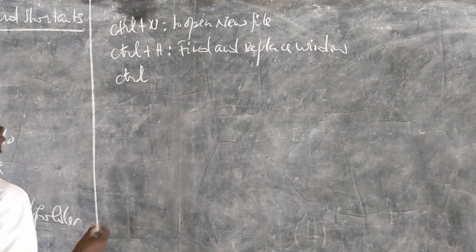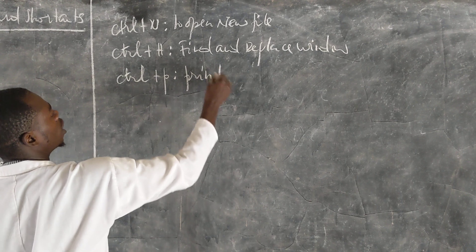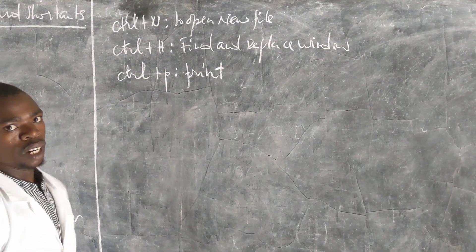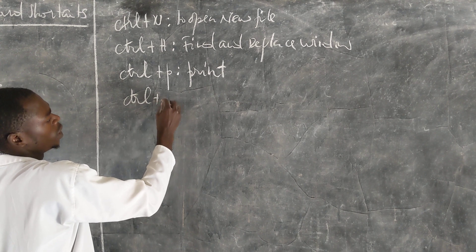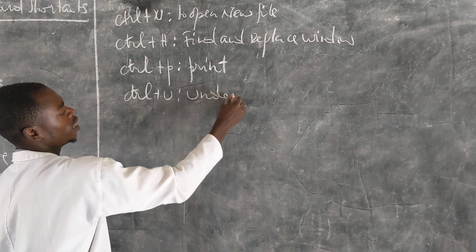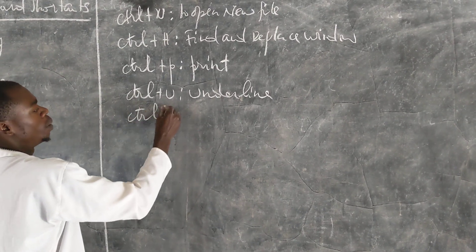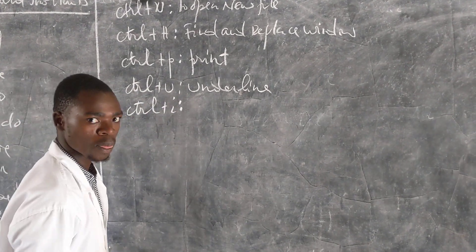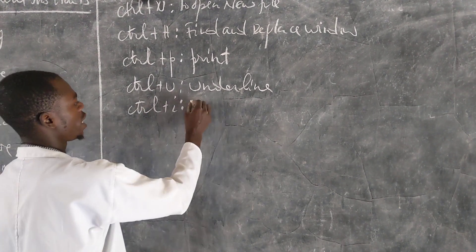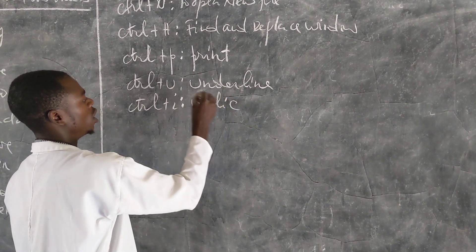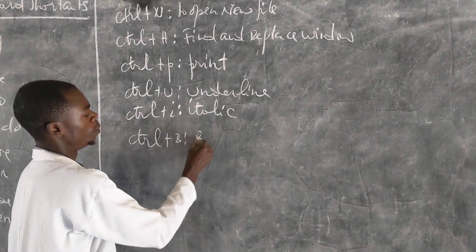Control and press the P this is print. Then control press U underline. Then control press I it is we use this control and press the I we italicize. Then control and press the B this is the bold.